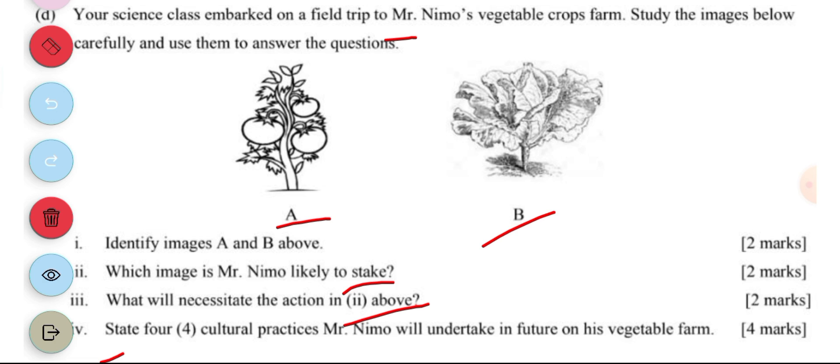Then part four says: name four cultural practices Mr. Nemo will undertake in future on his vegetable farm. Now cultural practices are undertaken in between planting and harvesting. So one includes watering, weed control, fertilizer application, pest control.